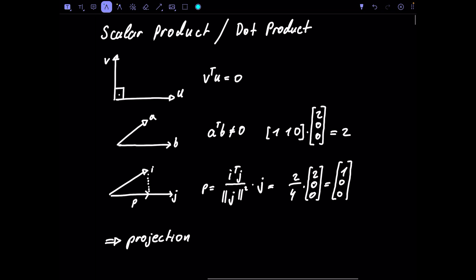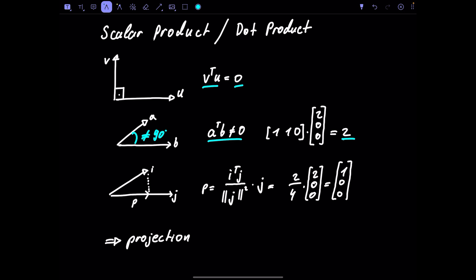The scalar product is v-transpose u. When two vectors are orthogonal — like v and u in this case — the scalar product is zero. When vectors like a and b are not orthogonal, not at 90 degrees, the scalar product is a non-zero scalar. For example, the dot product of [1, 1, 0] and [2, 0, 0] is two.